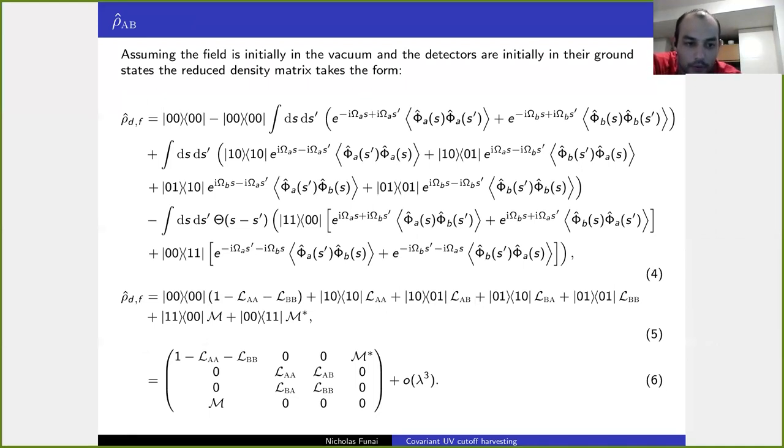So if we're going through the mathematics of the standard entanglement harvesting approach, we find that after the interactions take place and we trace out the field degrees of freedom, we end up with an expression given by equation 4, which describes the initial state of the detectors, which we take to be the ground states, and then various coefficients describing the various excitations of the field. These coefficients depend on two-point functions. We can compress all that notation into a density matrix, which is very common in entanglement harvesting equations, equation 6.